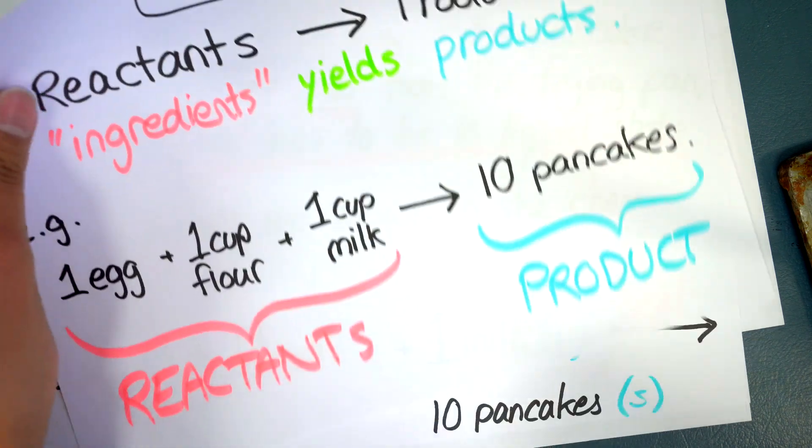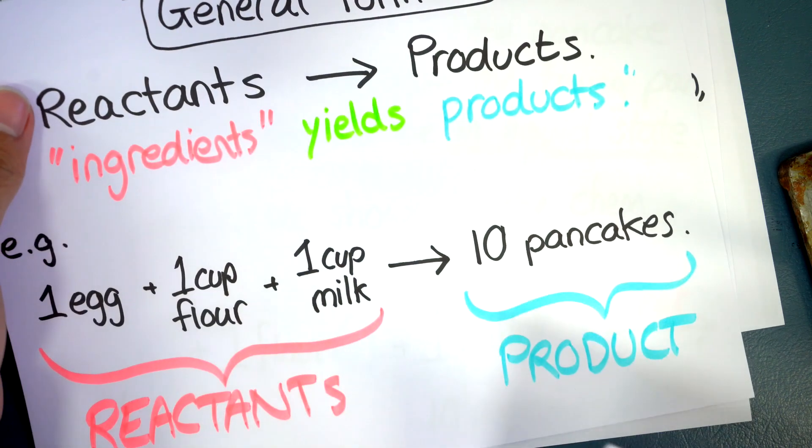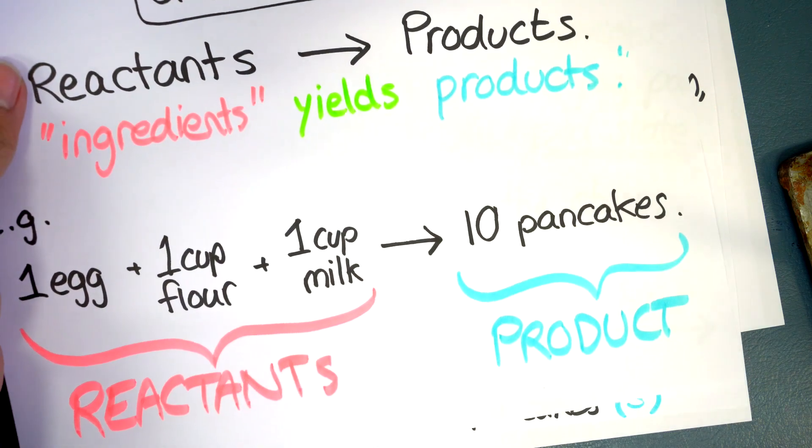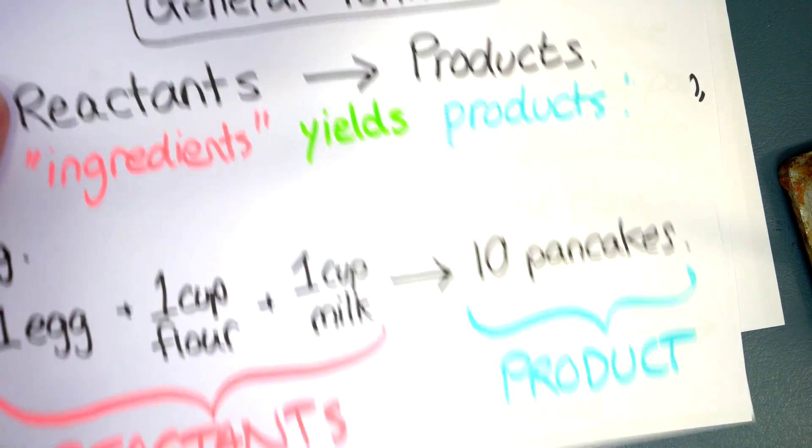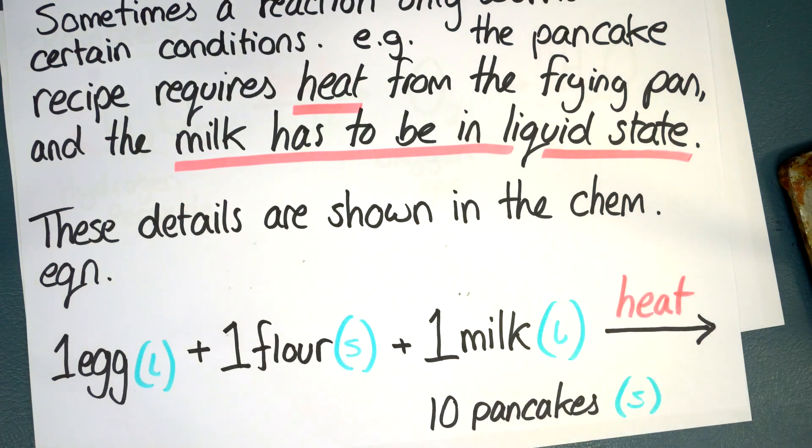So let's look at, before I move into specific examples of real chemical reactions, we're going to look at some other things that a chemical equation can show us. So sometimes a chemical reaction only works under a certain condition.